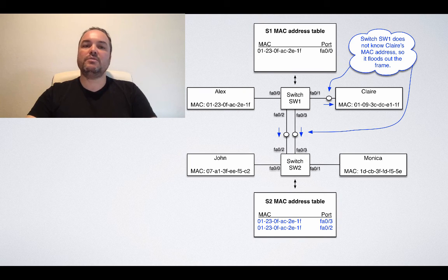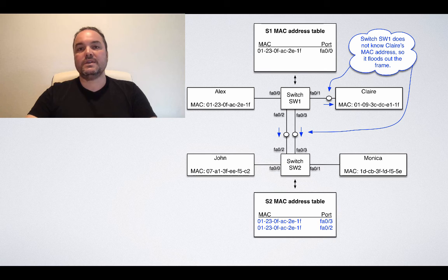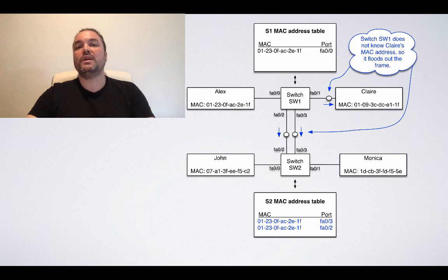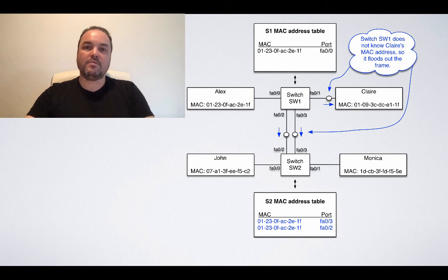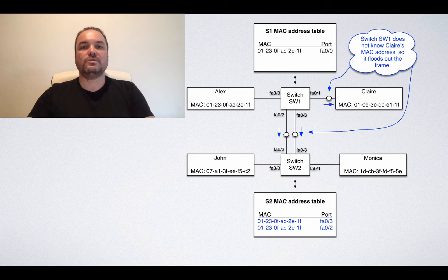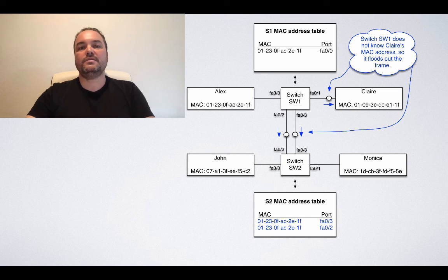However, the switch doesn't know yet about Claire. So SW1 needs to flood out the frame on all ports except on the port it came on. In this case, the frame came in from Alex on port FA00. At this point, we have Alex's MAC address saved in SW1 MAC address table, and Alex's frame is flooded out by SW1 on ports FA01 towards Claire, FA02 towards SW2, and FA03 also towards SW2. The frame eventually reaches Claire, but the switch still doesn't know Claire's port and Claire's MAC address. It just blindly sent out the frame on FA01, 02, and 03, and it happened to reach Claire on FA01.